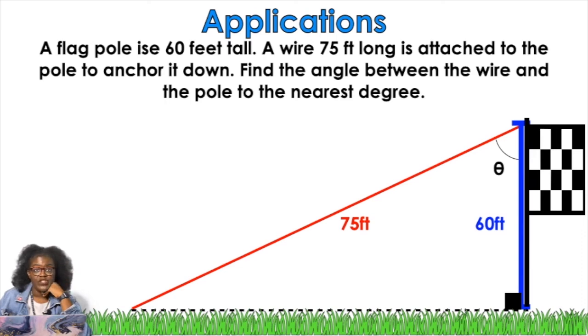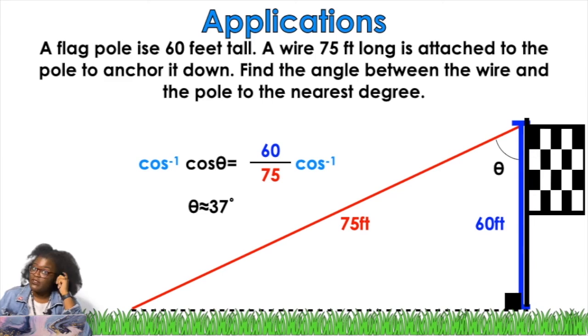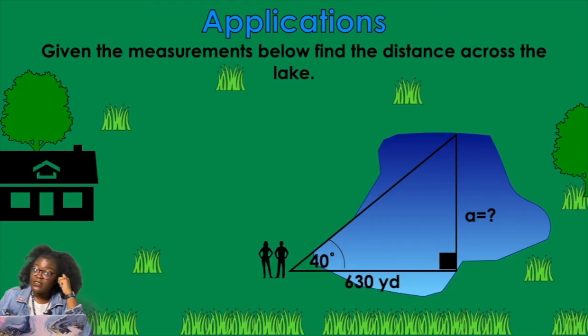SOH is opposite in hypotenuse, so no. KAH is adjacent in hypotenuse, so yes. Cosine of theta equals 60 over 75. Remember, to cancel out a trig function, I need to do the inverse trig function. So cosine negative one, cosine negative one. In your calculator, this is pure calculator work, baby. Pure calculator work. Theta equals 37 degrees.